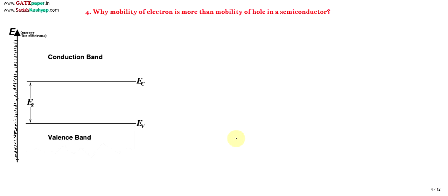Hello, now we will discuss why mobility of electron is more than mobility of hole — that is, we are going to discuss why μn is greater than μp.